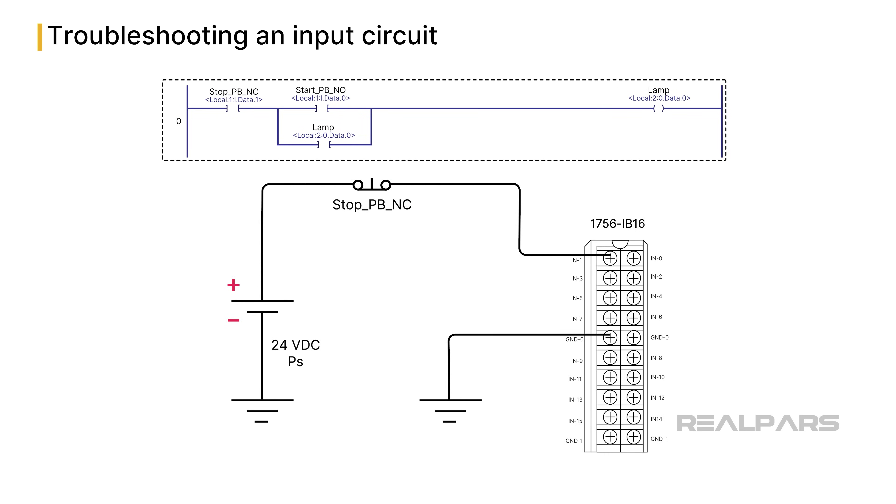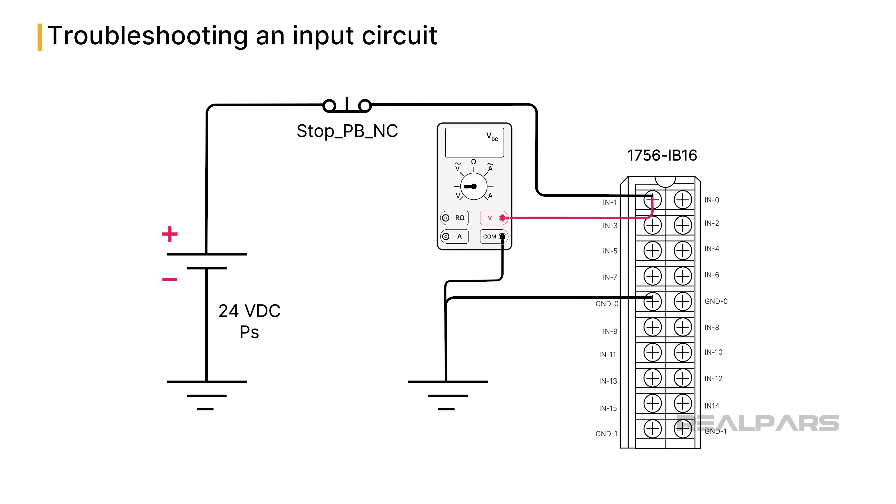The normally open logic symbol STOP-PB-NC will be true, as shown by the green shading. A DMM set as a voltmeter connected to terminal 1 of the module will measure plus 24 volts DC.